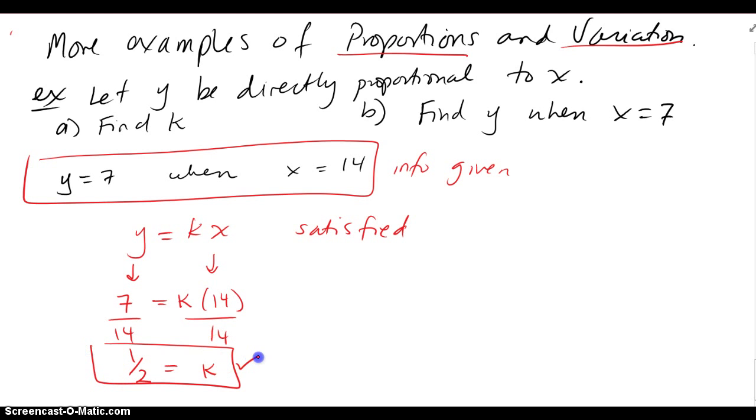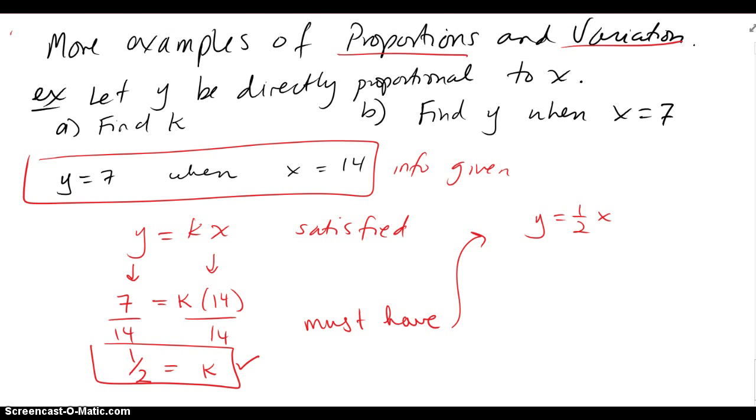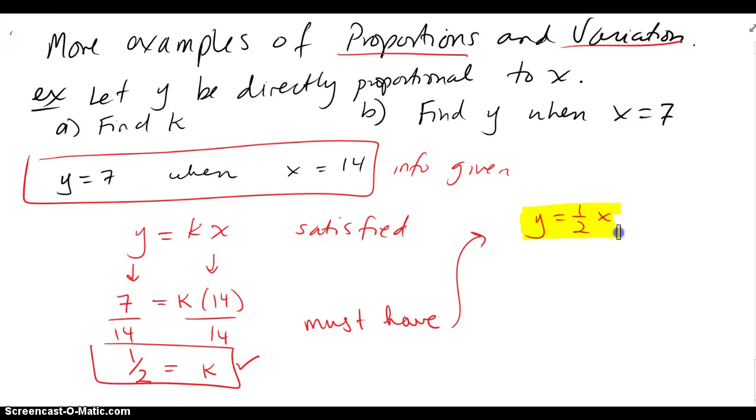So we found K, which means we must have Y equals 1/2 X as our overall equation that describes this direct variation problem. Now with that, I can find the questions I'm supposed to find. So A, we already found K is 1/2, and then B, we're supposed to find Y when X is 7. Well, if I have the equation, all I got to do is plug in the X value of 7, and it looks like I get Y equals 7/2.